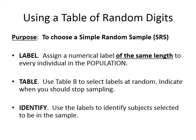The last step is to identify: once we've chosen the number of labels needed to satisfy our sample, we want to go back and look at the list and specifically say in context which subjects or individuals will actually participate in that sample.